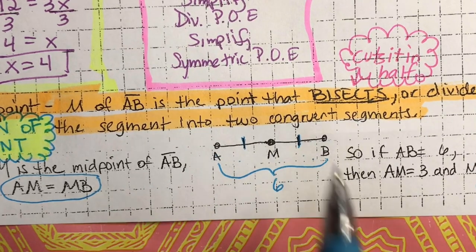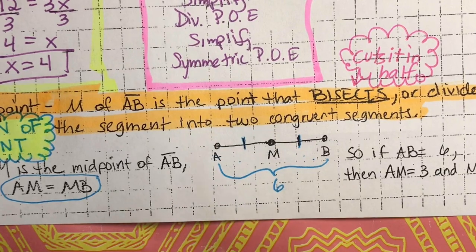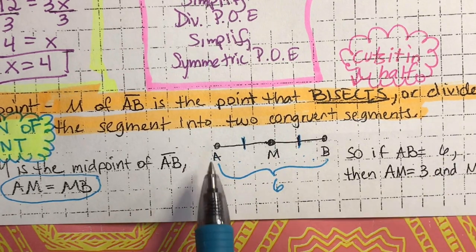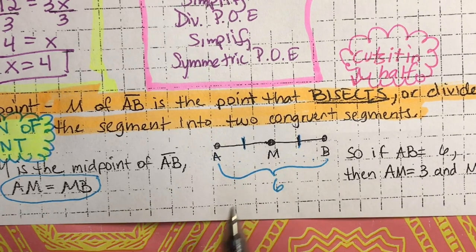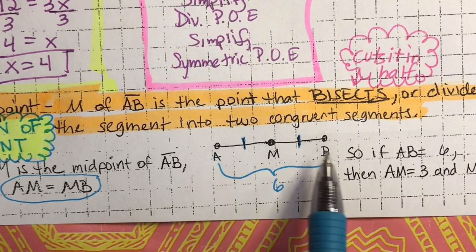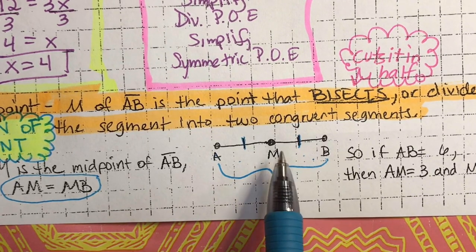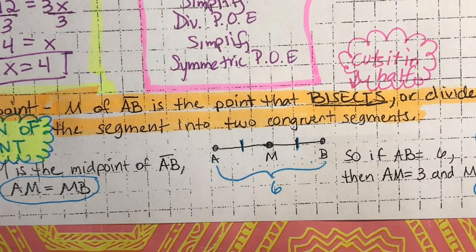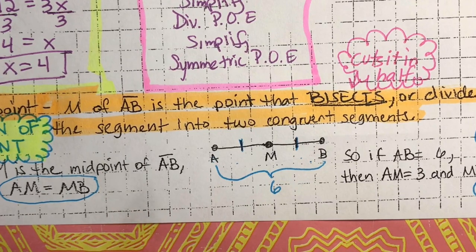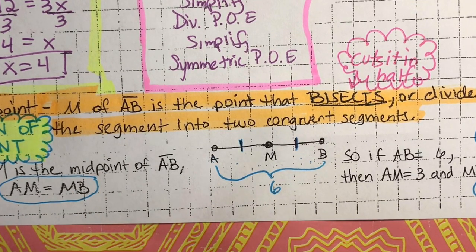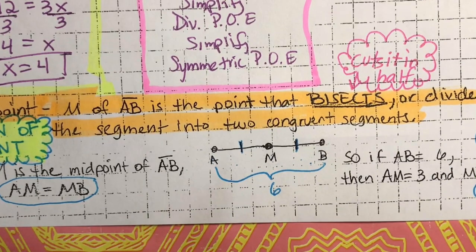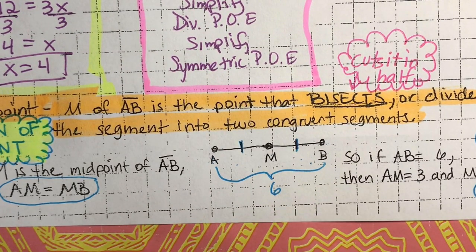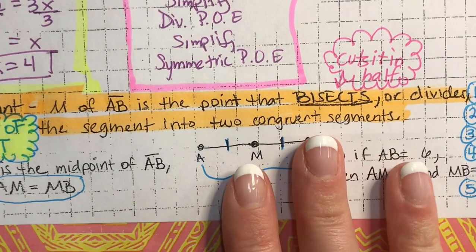So those are all five equations: AM equals MB; AB equals 2AM; AB equals 2MB; AM equals one half AB; MB equals one half AB. You need to know the definition of a midpoint. Whenever you hear 'midpoint,' you'll have to choose which of these five equations to use. We'll do some problems coming up and I'll show you how to select the right equation. Let's move on to Example 4.